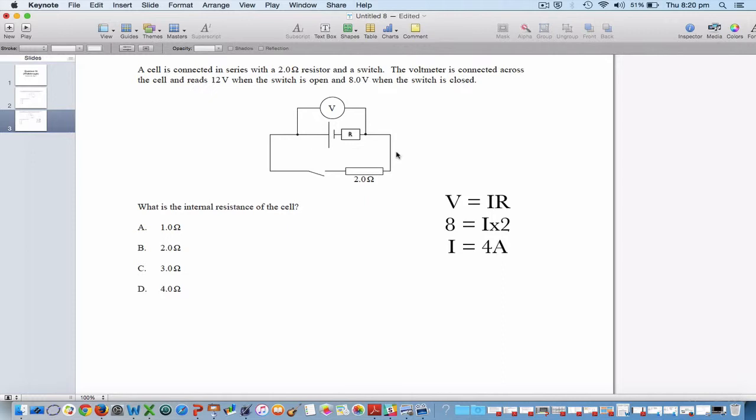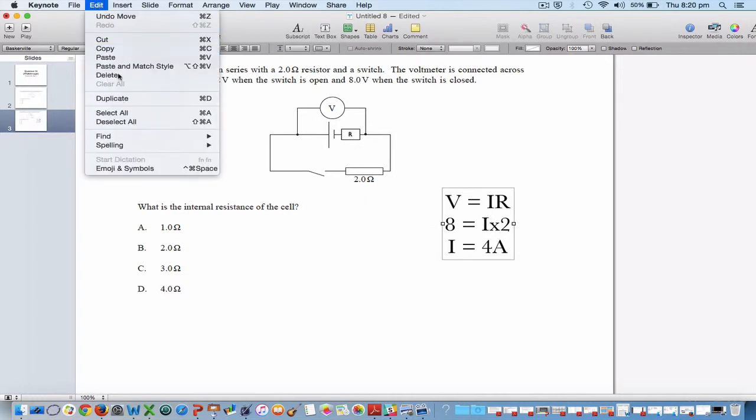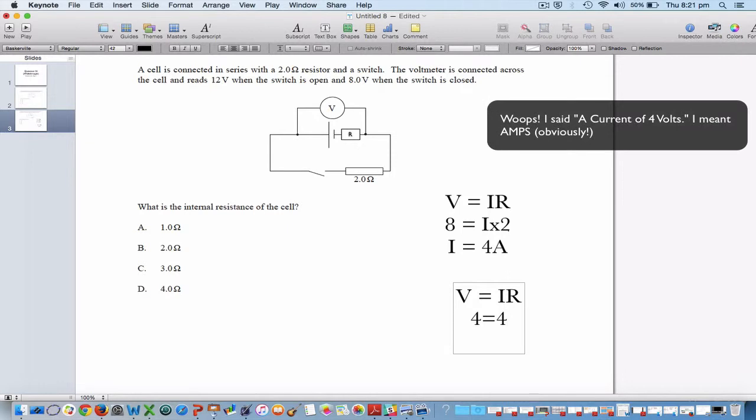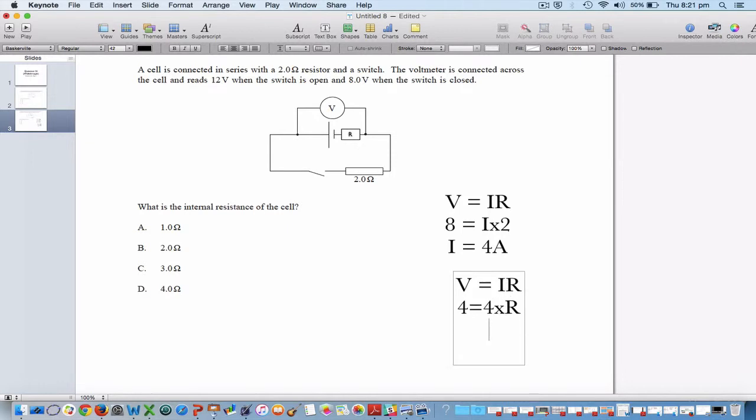And so if that's the case, if we've got 4 volts going through this resistor, and we also know from the previous calculation that we did that 4 amps is going through the resistor, then if we simply apply Ohm's law for a second time, that there's 4 volts going through that resistor, with a current of 4 volts as well, the unknown resistance, using this little formula, must be 1. And so that's why the answer is A.